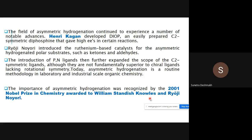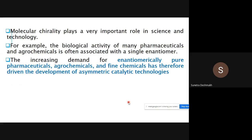We are now going to study the Noyori catalyst, which is based on ruthenium and rhodium transition metals. With the help of these metals, we perform asymmetric hydrogenation reactions. For this outstanding work, Knowles and Noyori received the Nobel Prize in 2001.